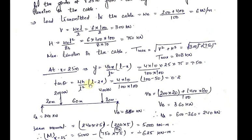We also need the value of tan θ to find the shear force. tan θ equals dy/dx. Differentiating the parabola equation gives dy/dx = 4h/L² × (L − 2x). Substituting the values gives tan θ = 0.2.